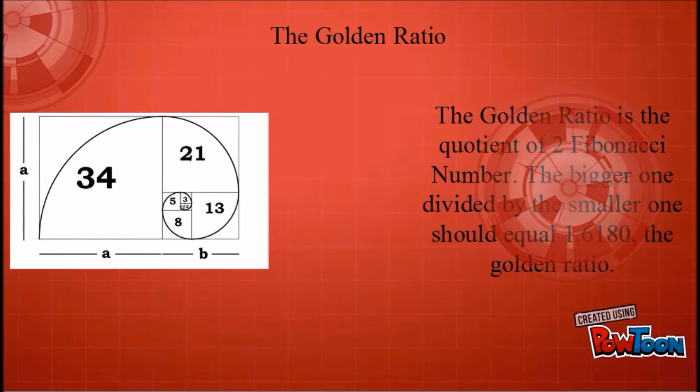The golden ratio is the quotient, which in other words is the divisible answer of two Fibonacci numbers. The bigger one divided by the smaller one should equal 1.6180 and so on. The golden ratio.